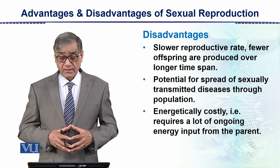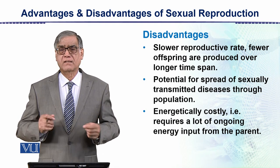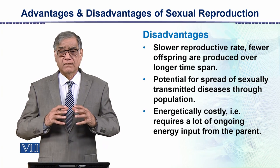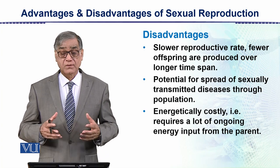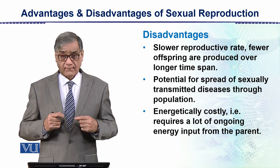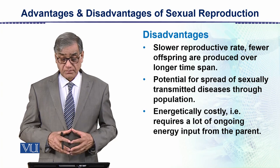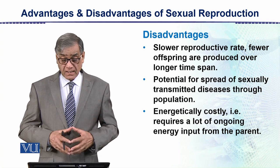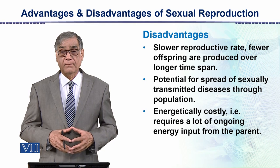The disadvantages of sexual reproduction include a slower reproductive rate — fewer offspring are produced over a longer period of time. There is also the potential for spread of sexually transmitted diseases through the population. Additionally, sexual reproduction is energetically costly, requiring a lot of ongoing energy input from the parents.